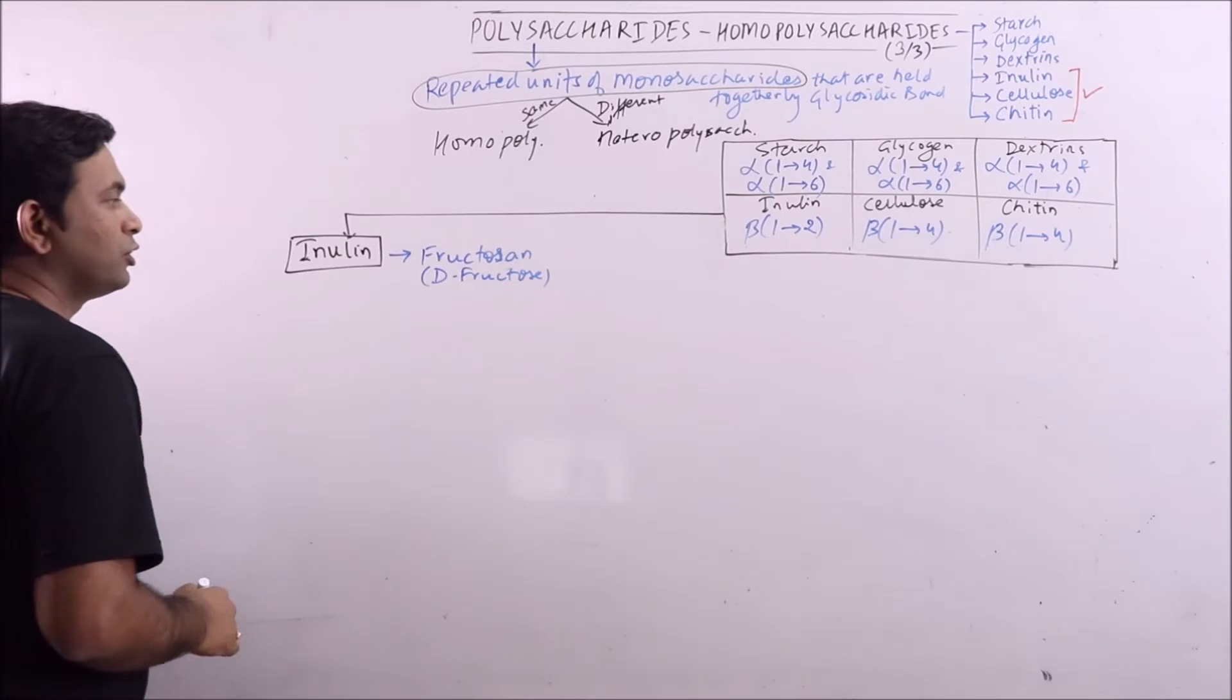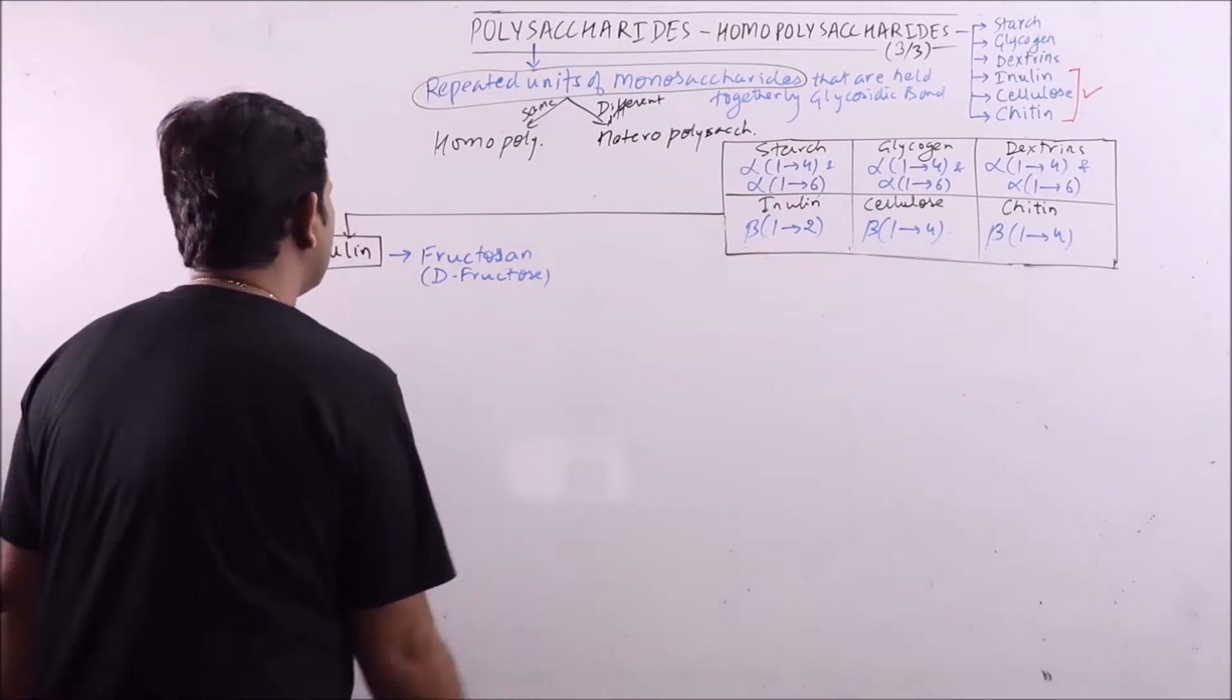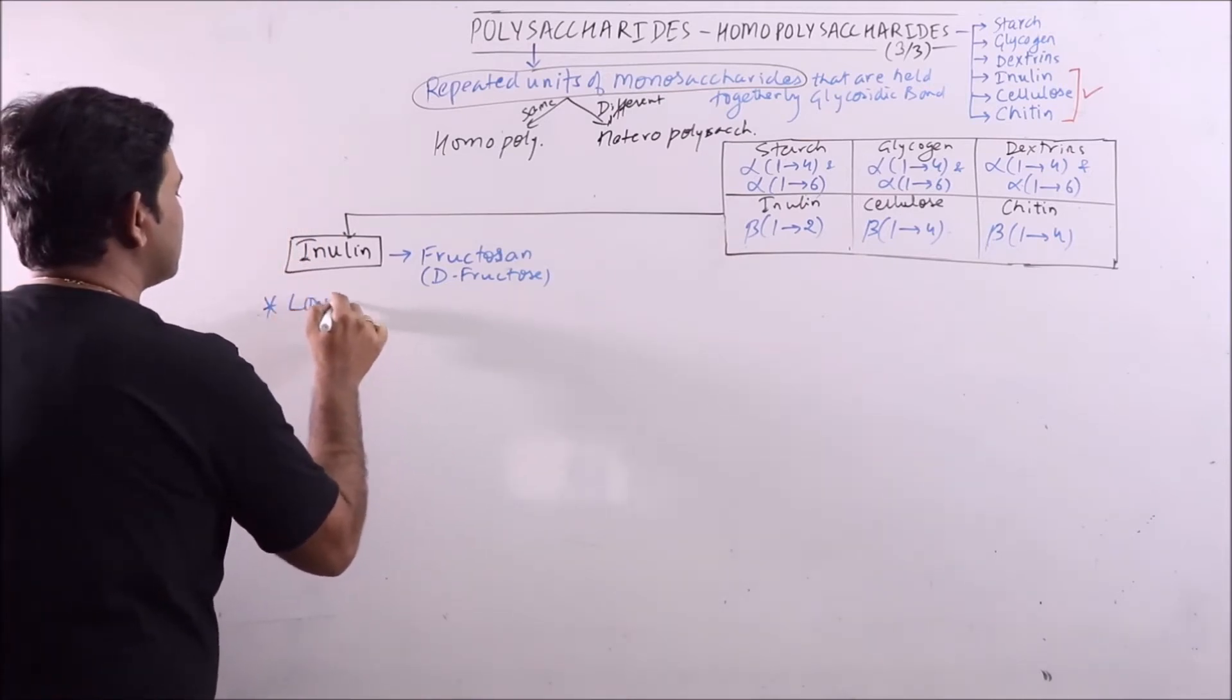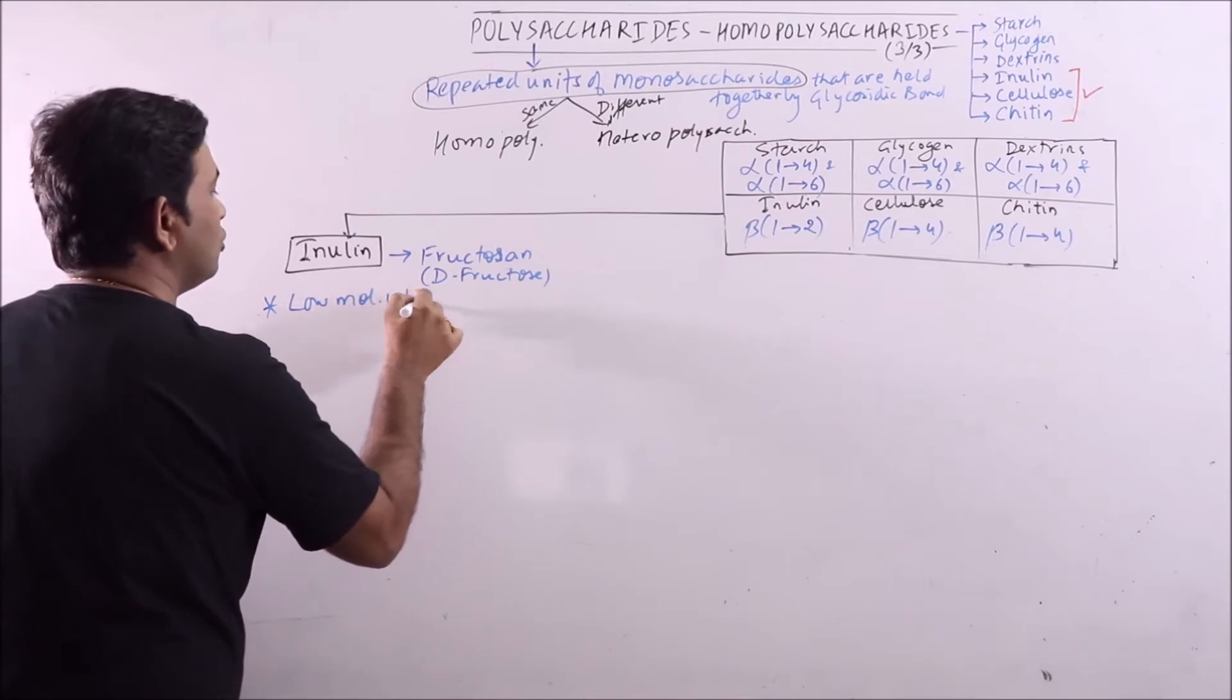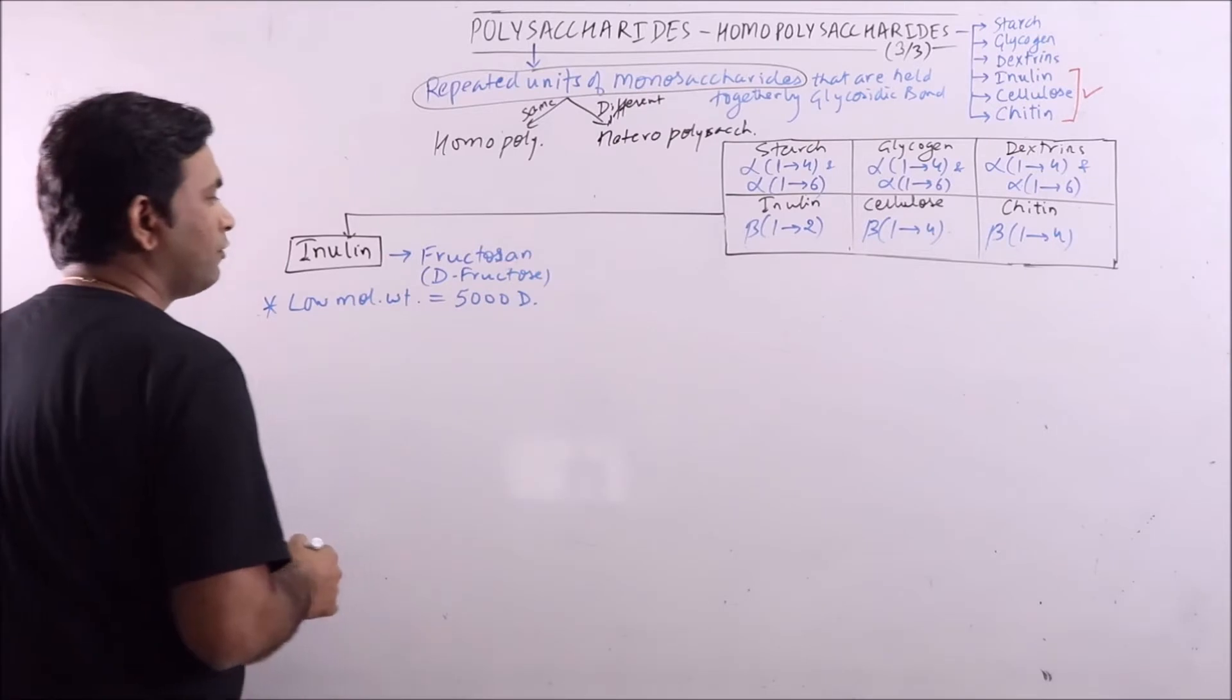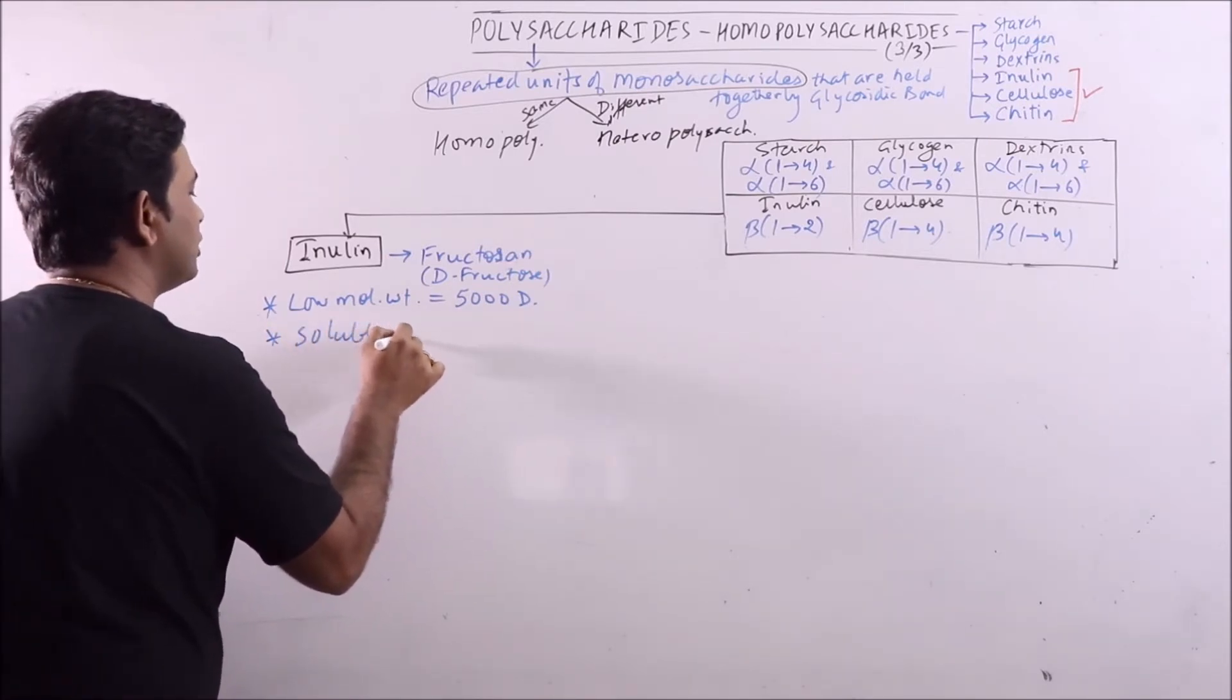Any two molecules of D-fructose will be linked by beta-1,2 glycosidic linkage. It is low molecular weight substance, having molecular weight around 5,000 daltons. It is soluble in water.